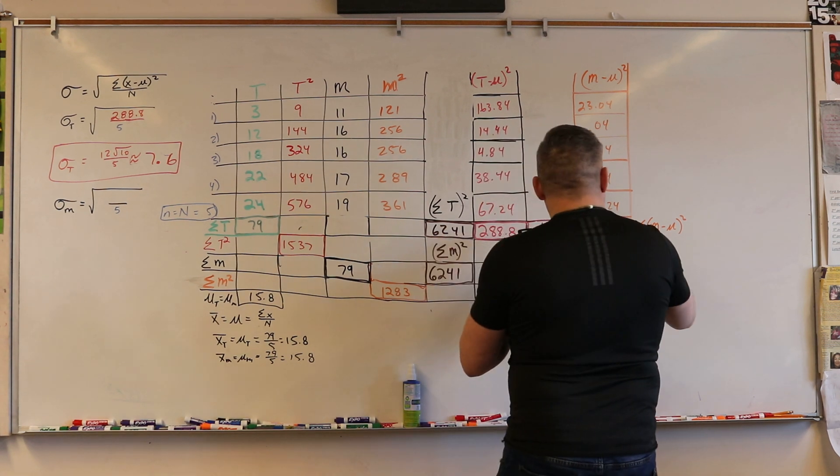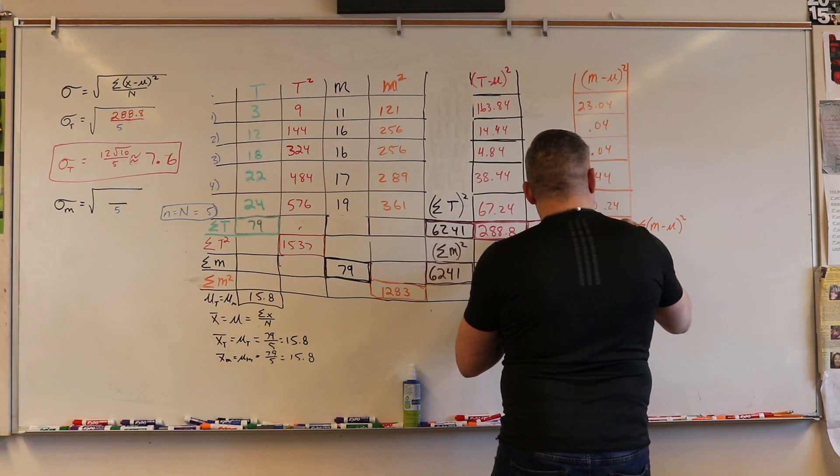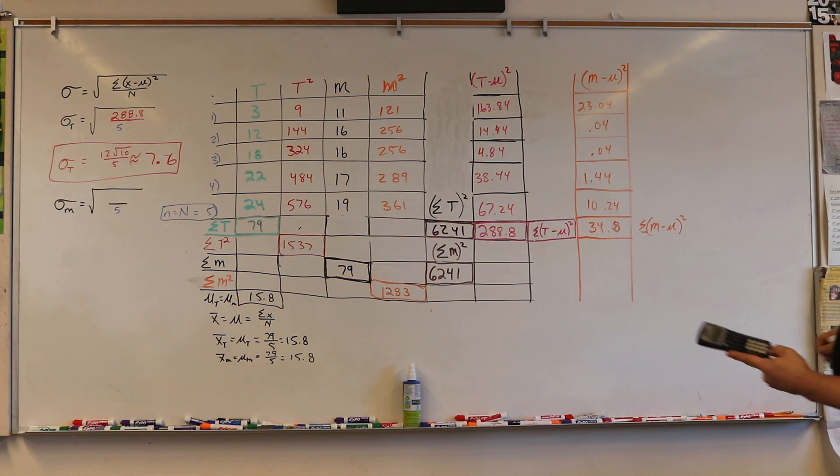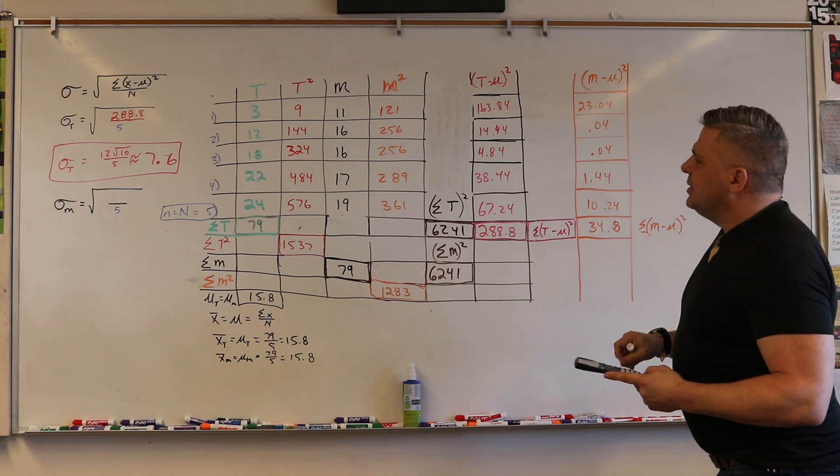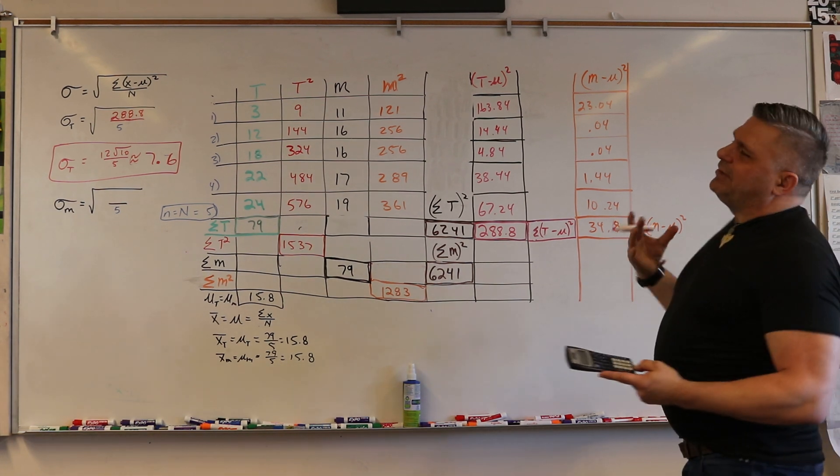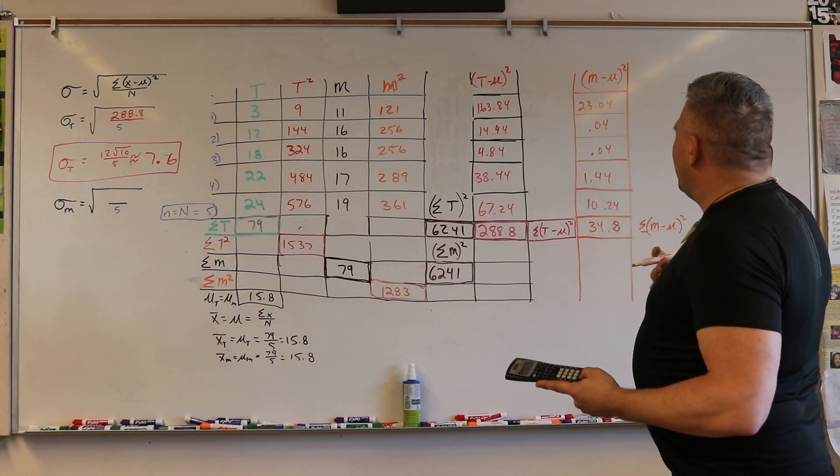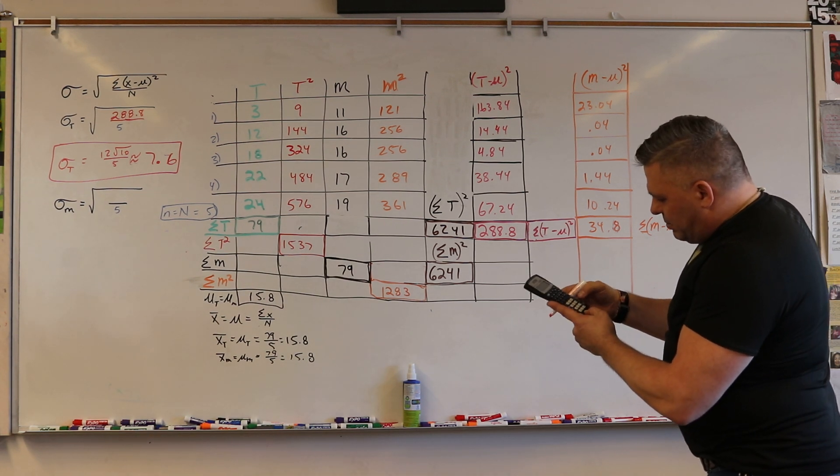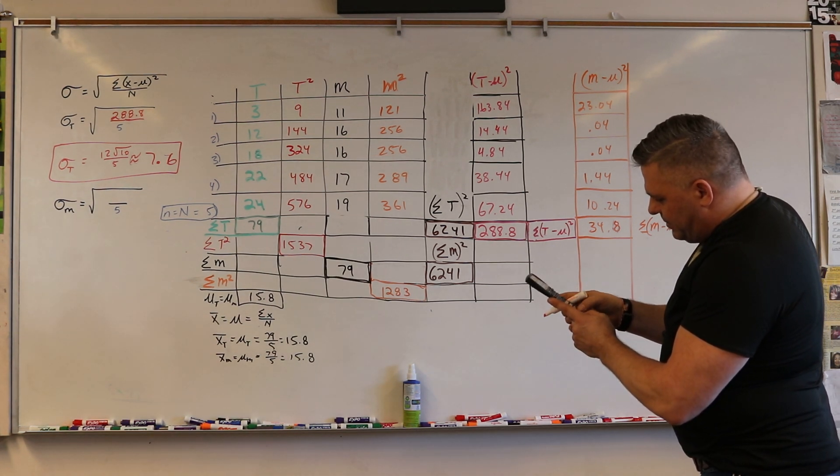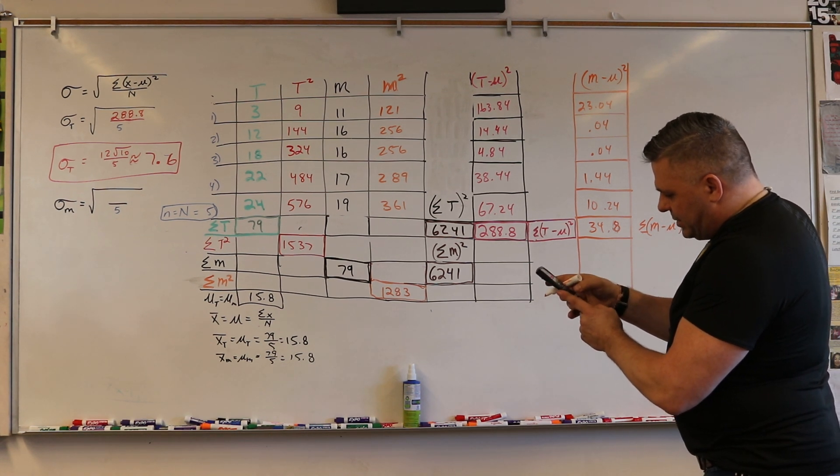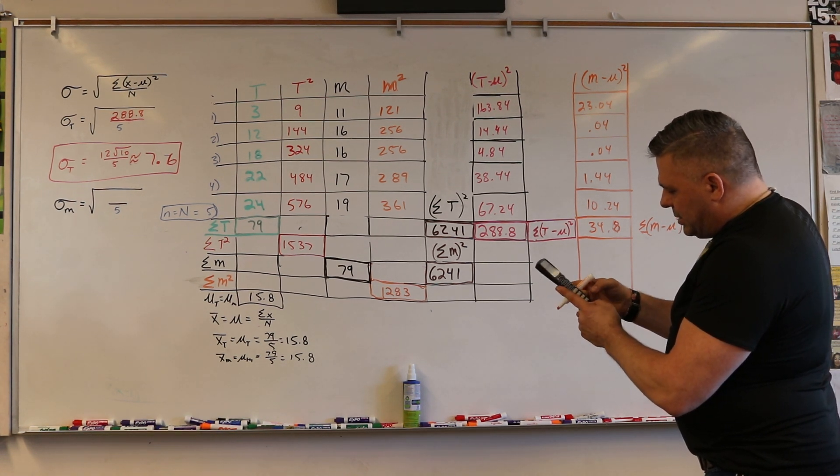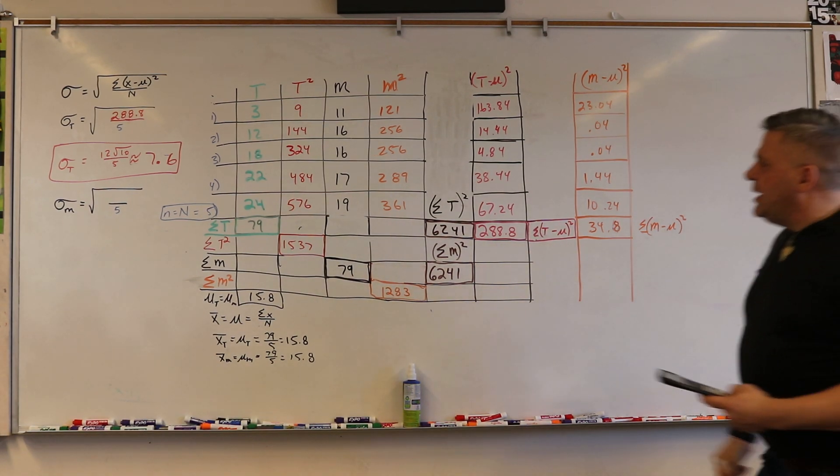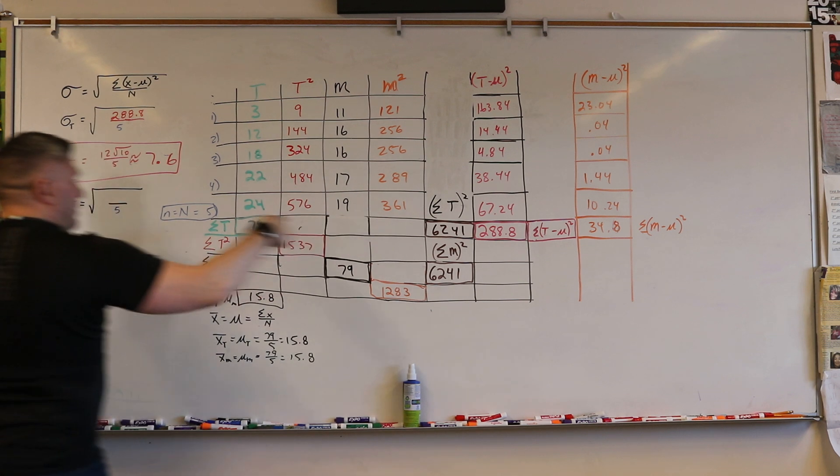I just want to check one thing. This one's a lot higher than this one. I just want to make sure I used the right number. I think it's correct because 11 is far away. So if I take 11 minus 15.8 equals and then I square it, yeah it is 23. Okay good, so these numbers should be right.